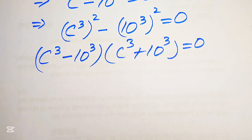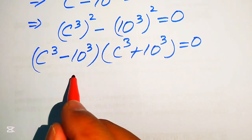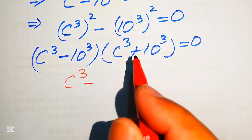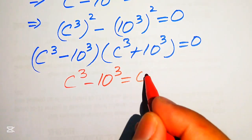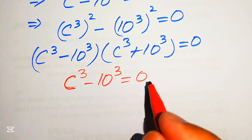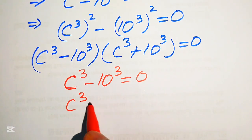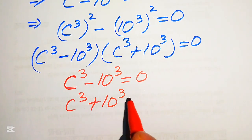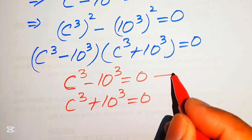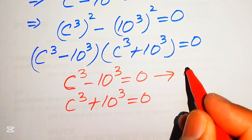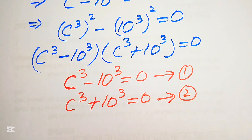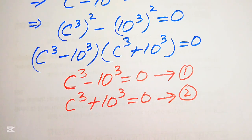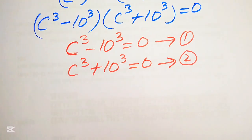Now we convert this equation into two cases. Case 1: C cubed minus 10 cubed equals 0, and Case 2: C cubed plus 10 cubed equals 0. We call these equation number 1 and equation number 2, and we need to solve both for the values of C.